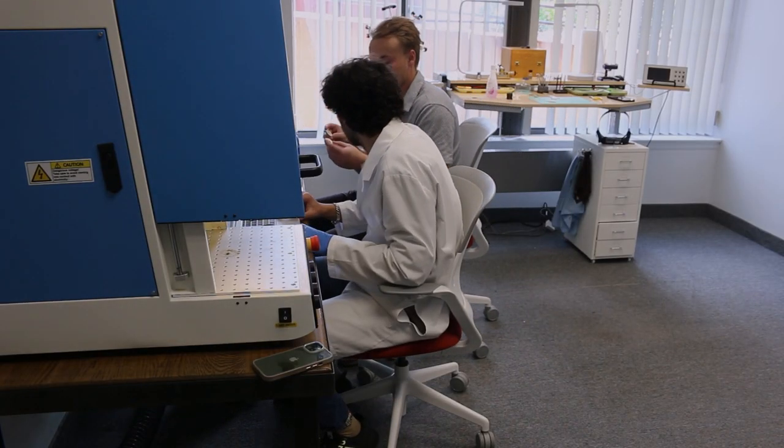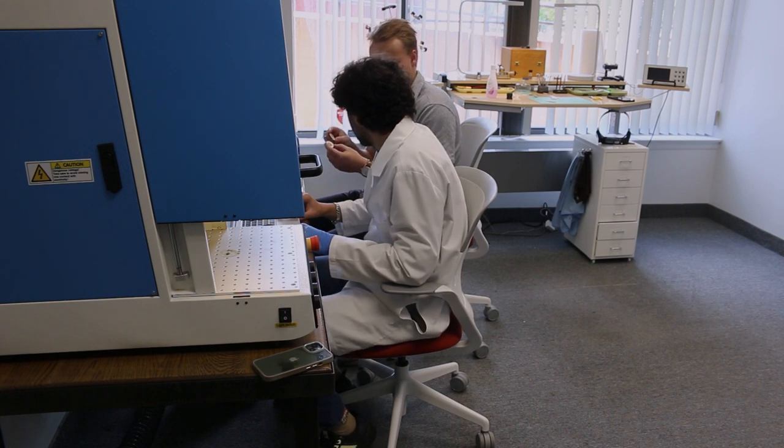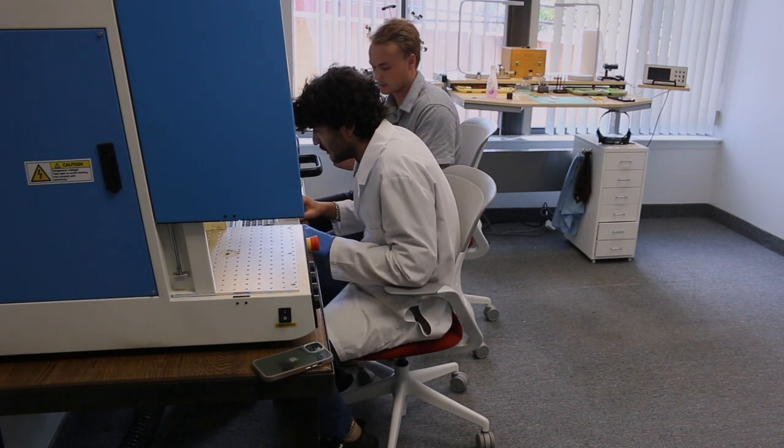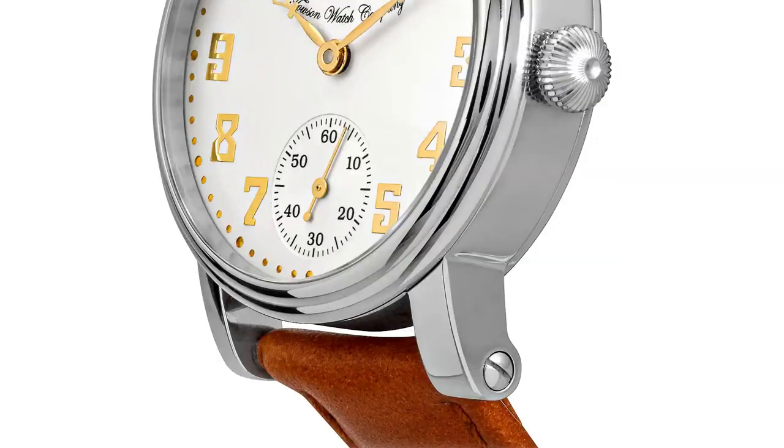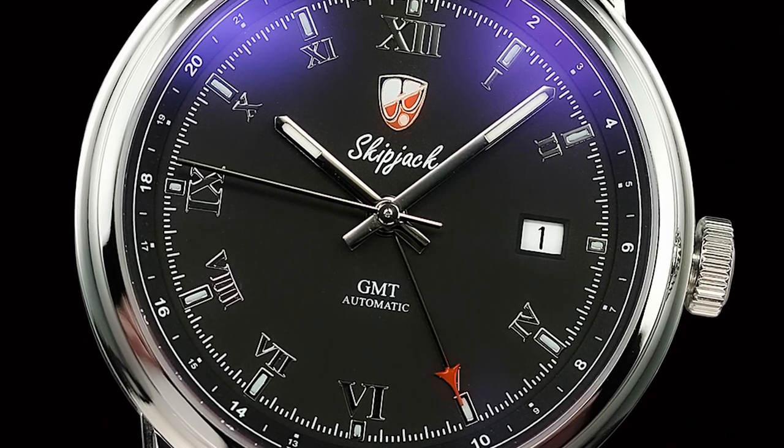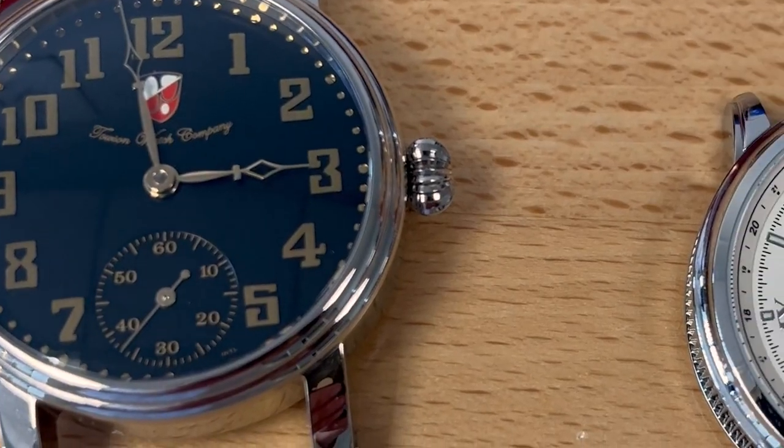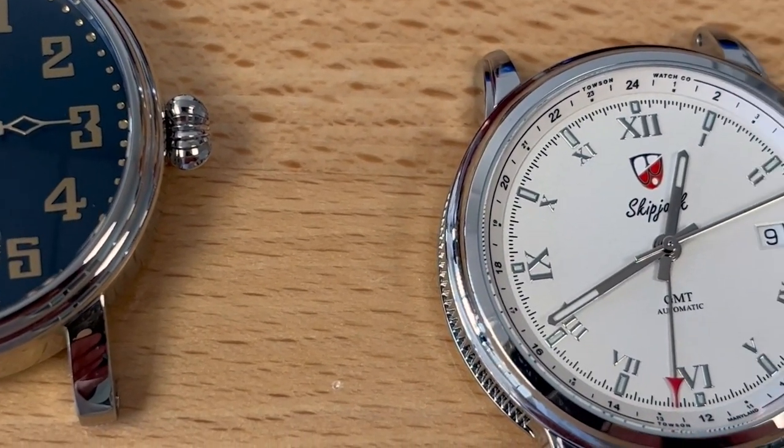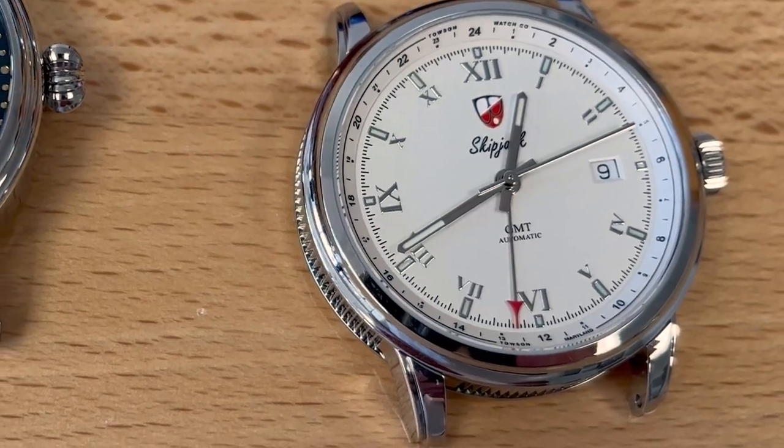We needed to find a watch that we made that had the potential to fit these parameters. After some deliberation, we narrowed it down to two: The Potomac with its vintage look, and the Skipjack with its elegant and slim bezel. At the end of the day, we landed on the Skipjack, which will deliver the slim and understated feel of the original vintage watch.